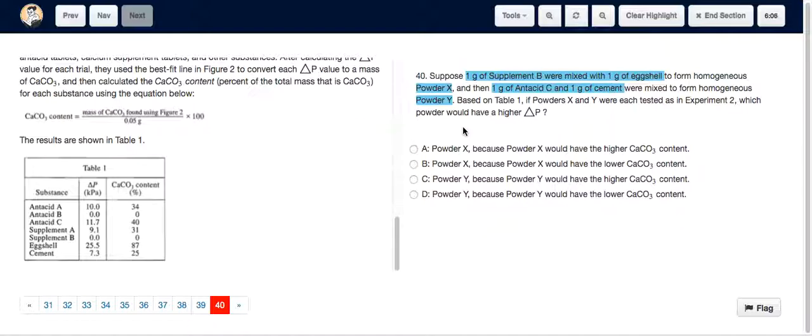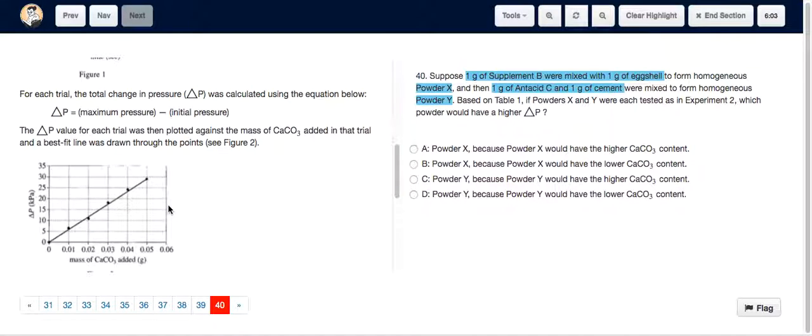...that powder X has a greater calcium carbonate content. And we can see from the figure that the greater the calcium carbonate content, the greater is the change in pressure. So the answer is A: powder X, because powder X would have the higher calcium carbonate content.